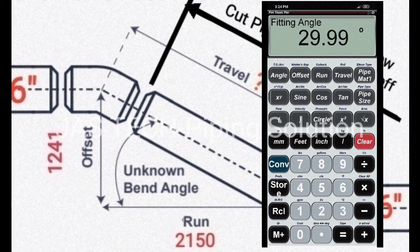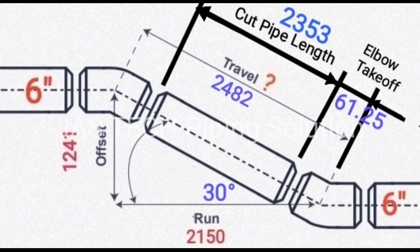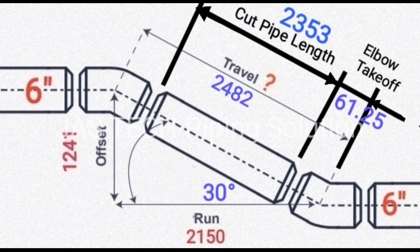So, as per our calculation, our result is cut pipe length 2353, elbow takeoff 61.25, travel 2482, our degree 30 Degree.